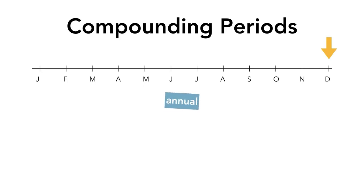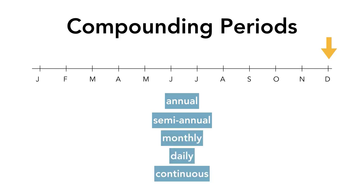We will always assume that cash flows are paid or received at the end of each period, unless expressly stated otherwise. There can be compounding for any time period. Common compounding periods include semi-annual, monthly, daily, and continuous compounding. We will go over each of them in detail.